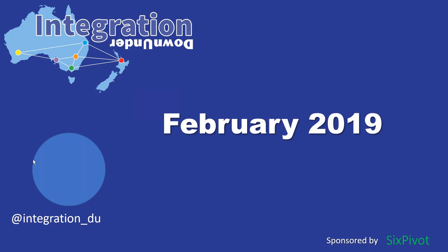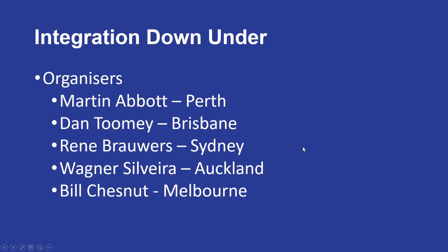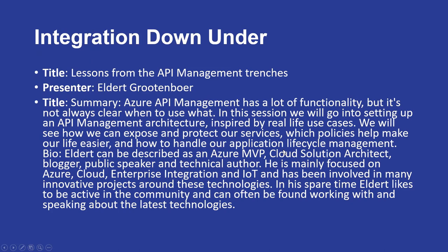Welcome everyone to the extra meeting we're having in February. We've got a meeting tonight and then a meeting next Thursday night, and in between we've got the Ignite tour in Sydney next Wednesday and Thursday. Jeff Holland will be speaking in Melbourne on Monday the 11th and in Sydney on the 14th. Our organizers are Martin, Dan, Renee, Wagner and myself, and tonight we have Eldert talking about lessons from the API management trenches.